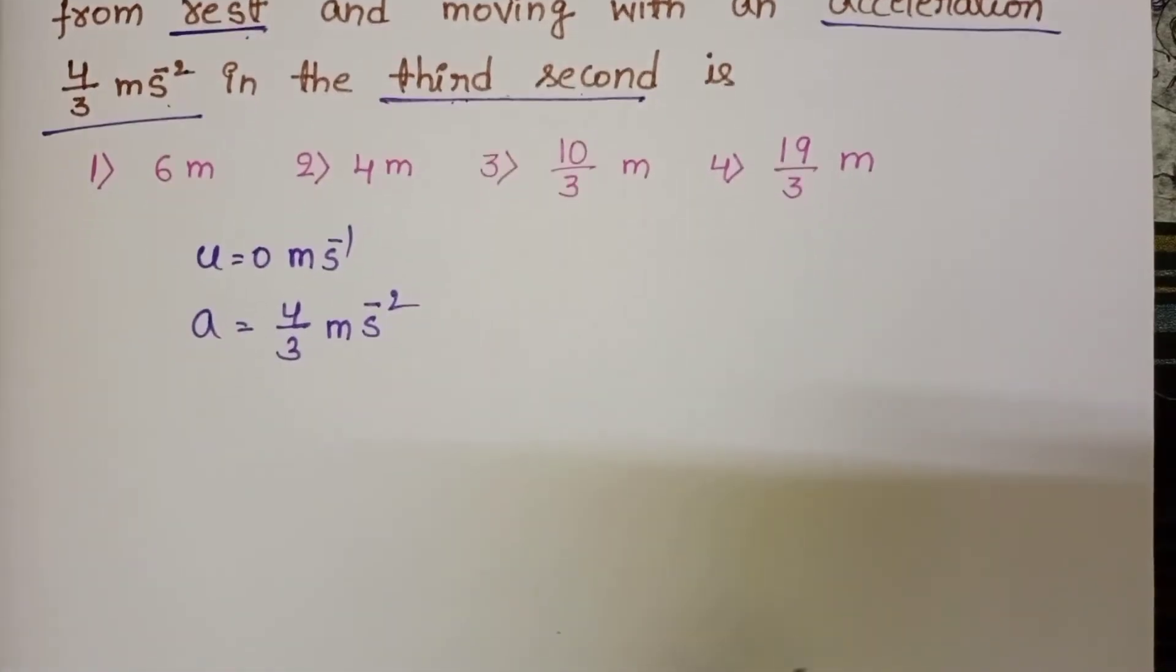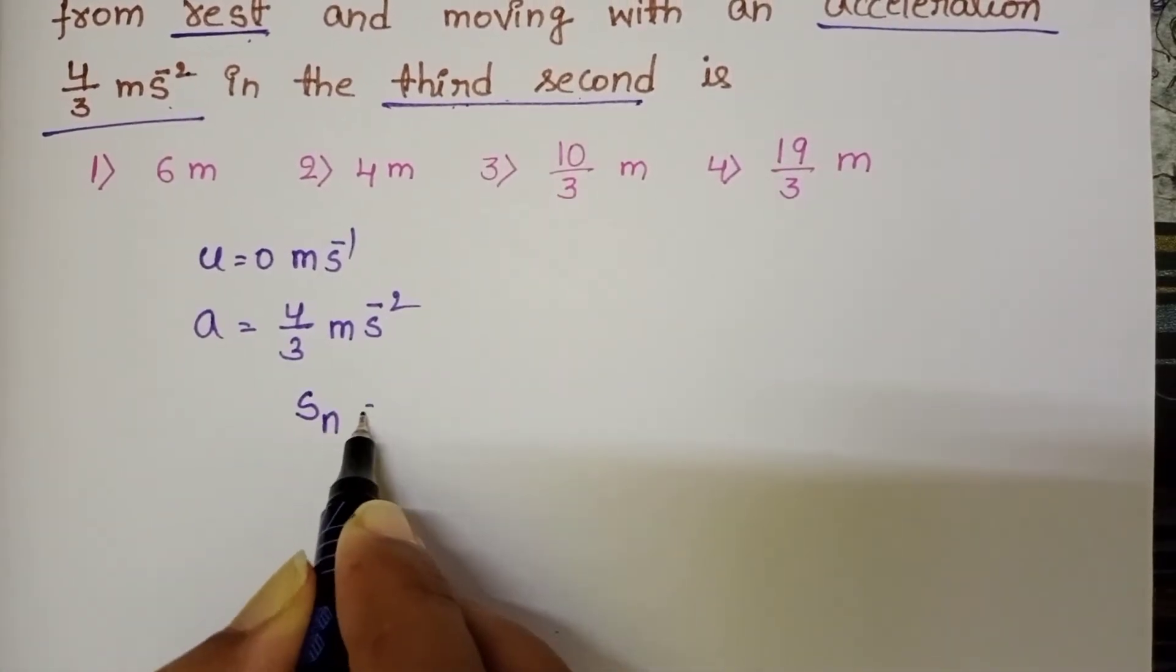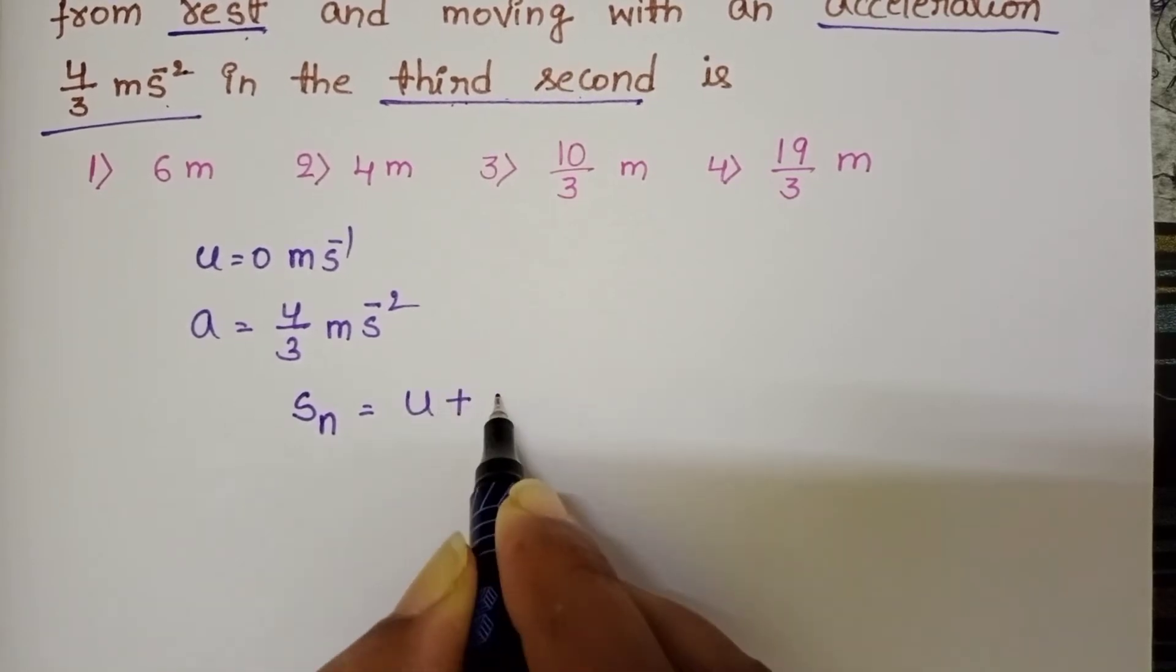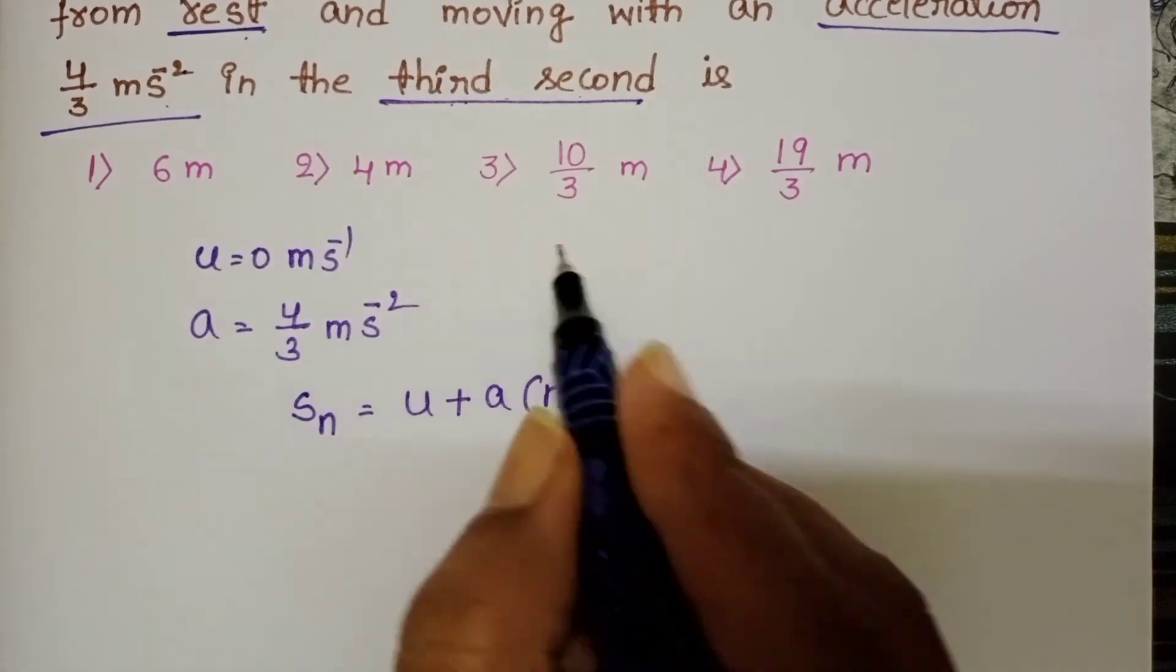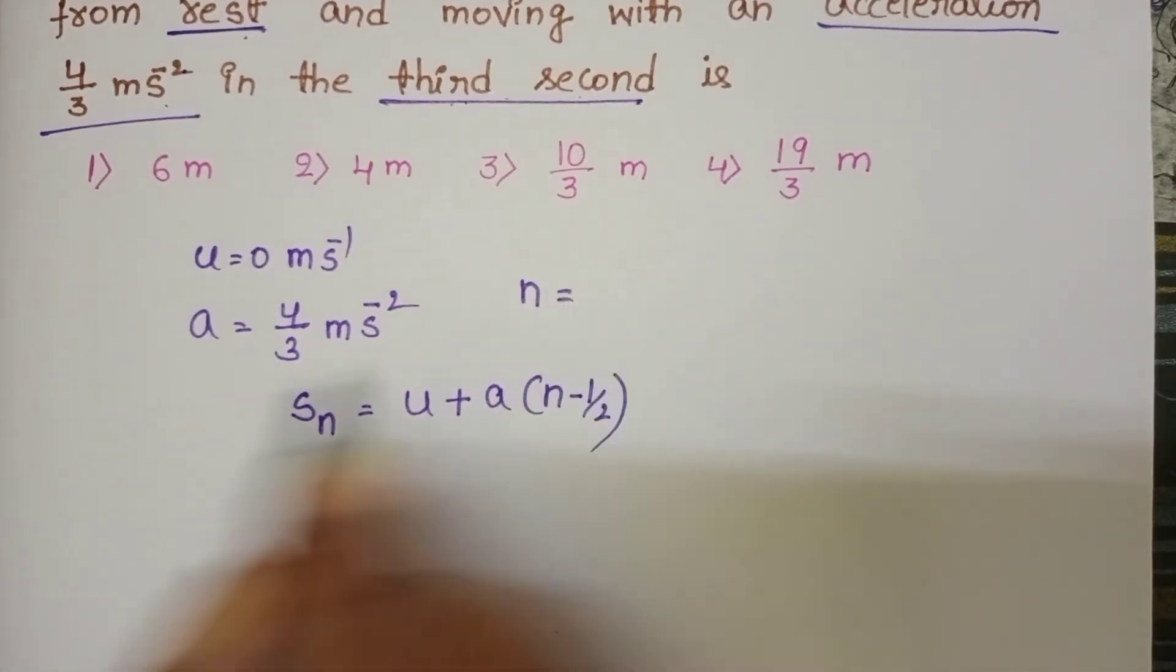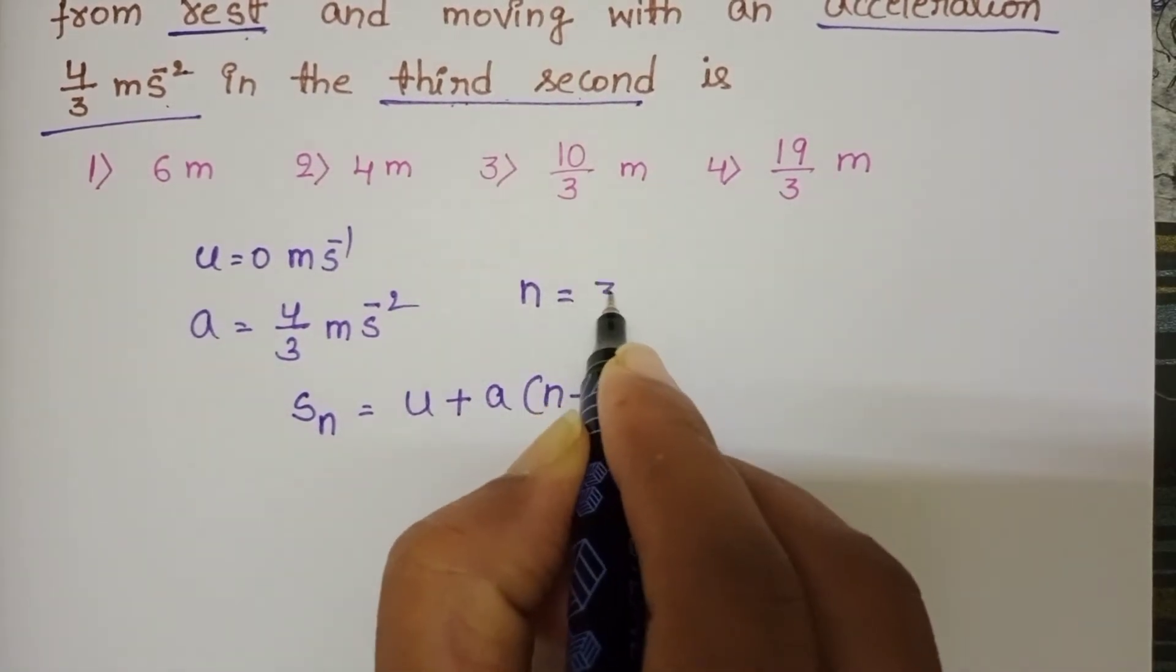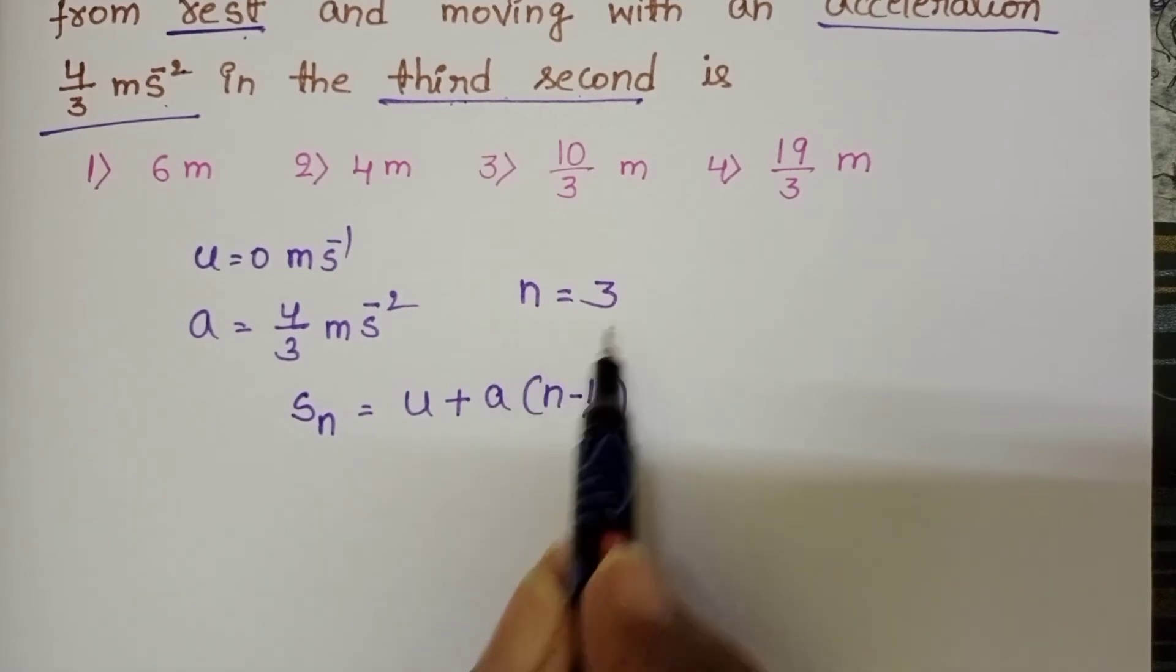So take the SN equation. SN is equals to u plus a into n minus half. Given time is the third second, so n is equals to 3.